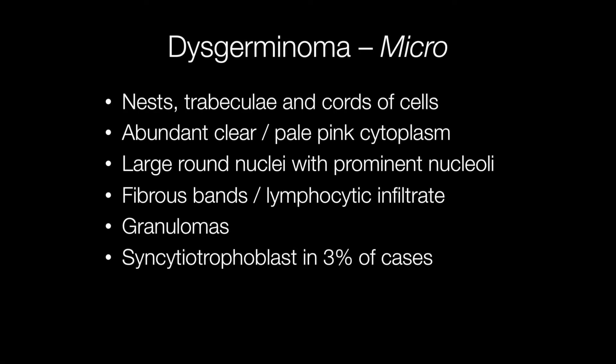Histologically the tumour cells are arranged in nests, trabeculae, and cords, and also sometimes as single cells. The cells have abundant clear or pale pink staining cytoplasm with a large round nucleus and a prominent nucleolus.